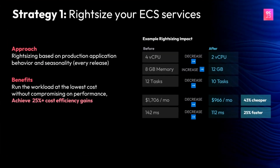The first step is rightsizing your ECS services — finding the best possible configuration for your CPU, memory, and task count. We have to consider factors like application releases and the traffic it encounters. Sedai looks at metrics like CPU, memory, and traffic over a long period of time and comes up with the ideal configuration. Sedai is aware of application behavior and learns traffic patterns. Through reinforcement learning, it keeps fine-tuning this configuration, validates it, and modifies it after every release. In this example, we reduced the CPU, increased memory, and decreased task count, achieving cost savings of 43% while also running faster.